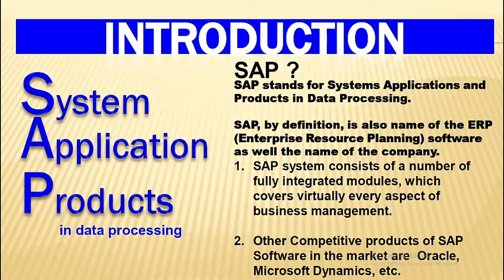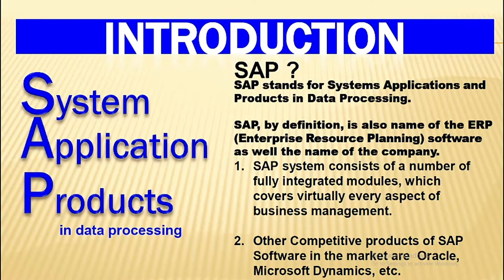SAP stands for Systems, Applications, and Products in Data Processing. By definition, SAP is also the name of the ERP — Enterprise Resource Planning — software, as well as the name of the company. The SAP system consists of a number of fully integrated modules which cover virtually every aspect of business management. Other competitive products of SAP software in the market are Oracle, Microsoft Dynamics, etc.